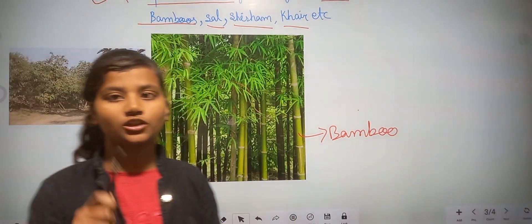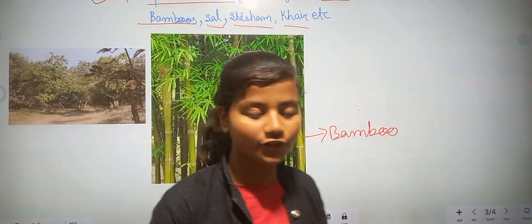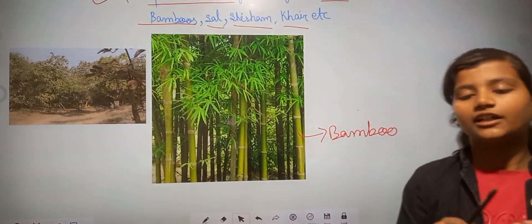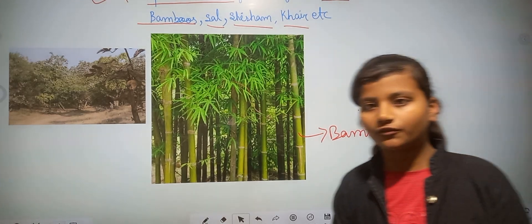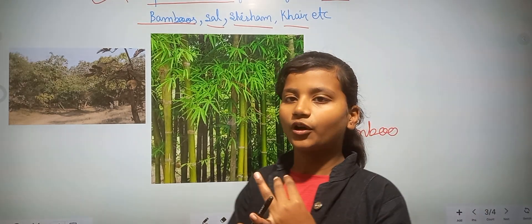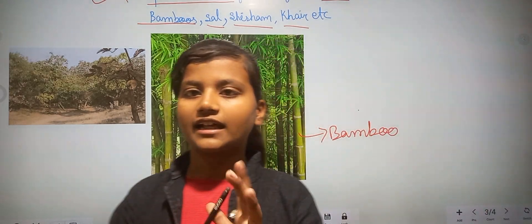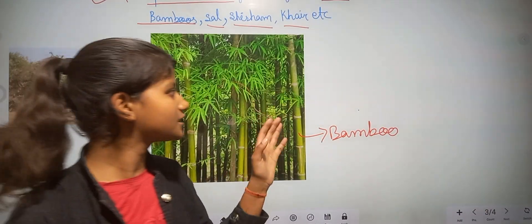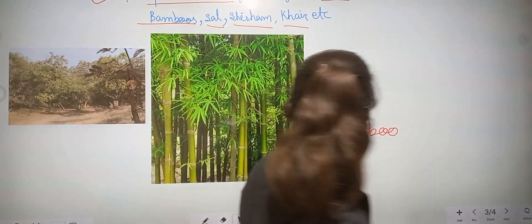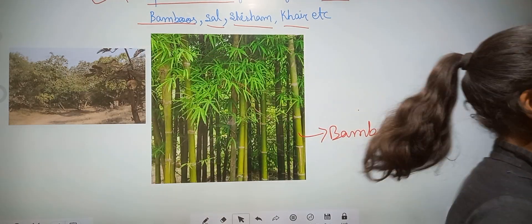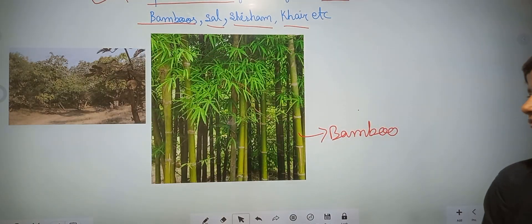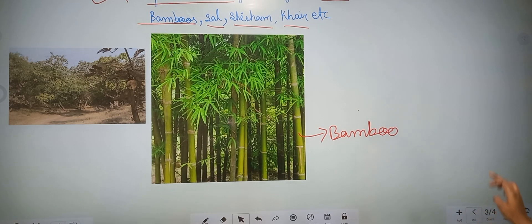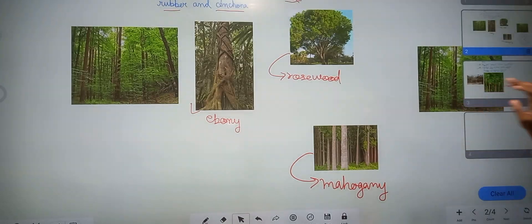There are five types of vegetation found in India: first, tropical evergreen forest; second, tropical deciduous forest; third, tropical thorn forest; fourth, montane forest; and last, mangrove forest. This is the deciduous forest. I hope you understand what is deciduous forest and what is evergreen forest.